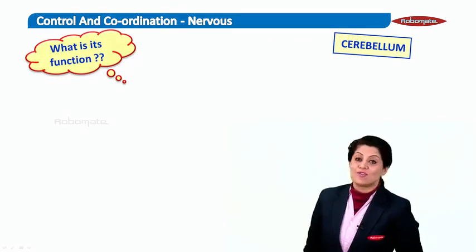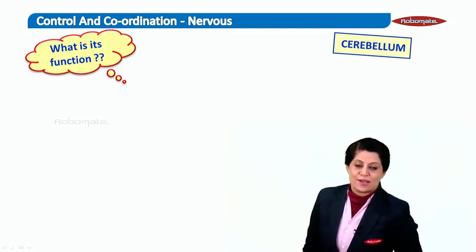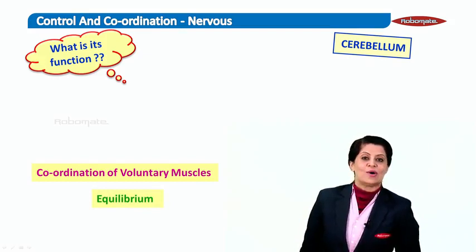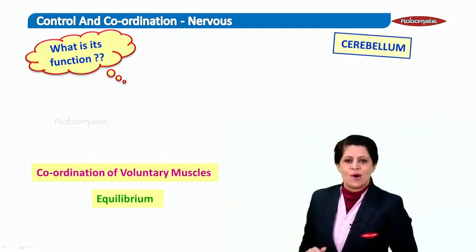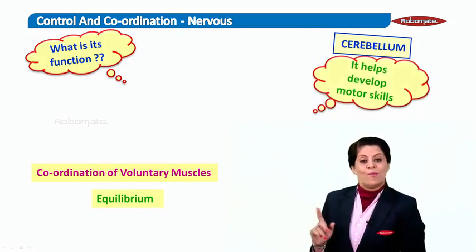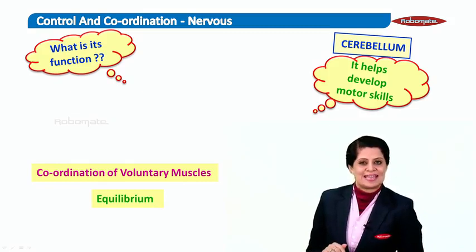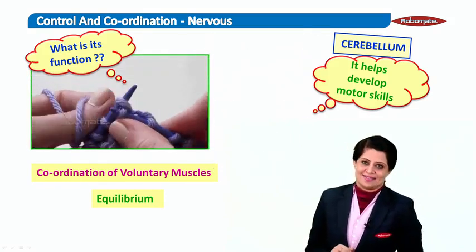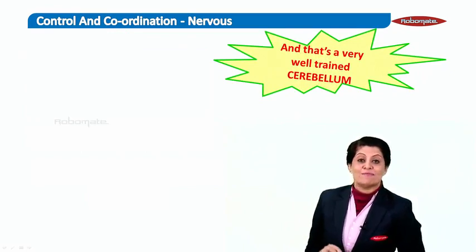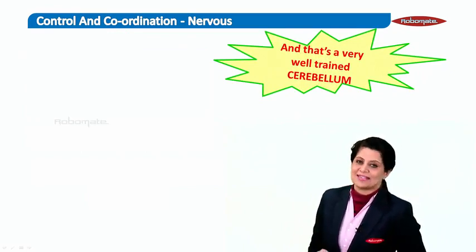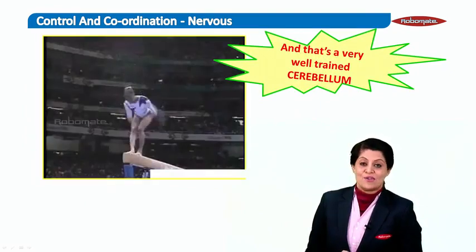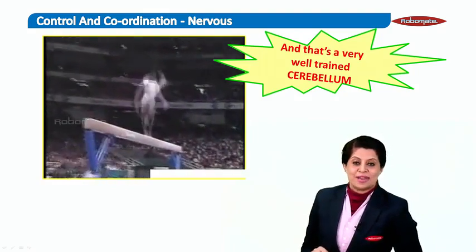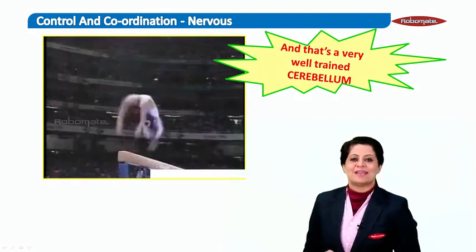What is the function of the cerebellum? Its important functions include coordination of voluntary muscles and maintaining your equilibrium — meaning it helps develop motor skills and movement, like walking or even finer skills like knitting. You can see the coordination of voluntary muscles and maintaining equilibrium — a beautifully trained cerebellum.